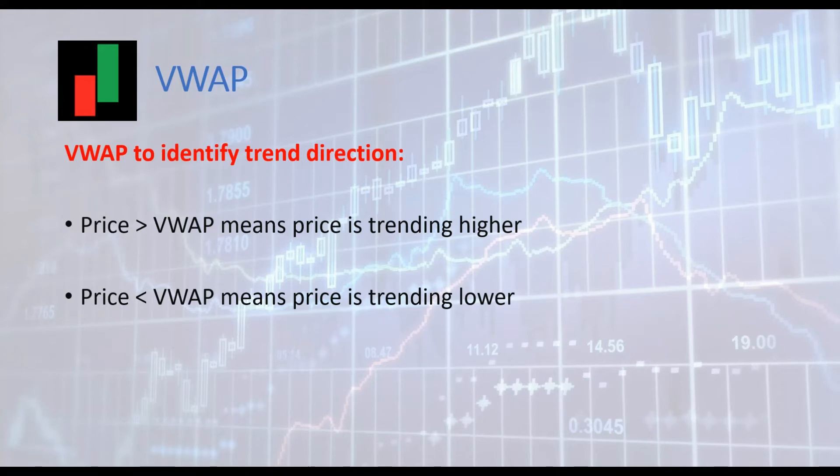VWAP can be used to determine the trend. The rule is quite simple: if price is above VWAP, the trend is up; if price is below VWAP, the trend is down. Let's see a real example.